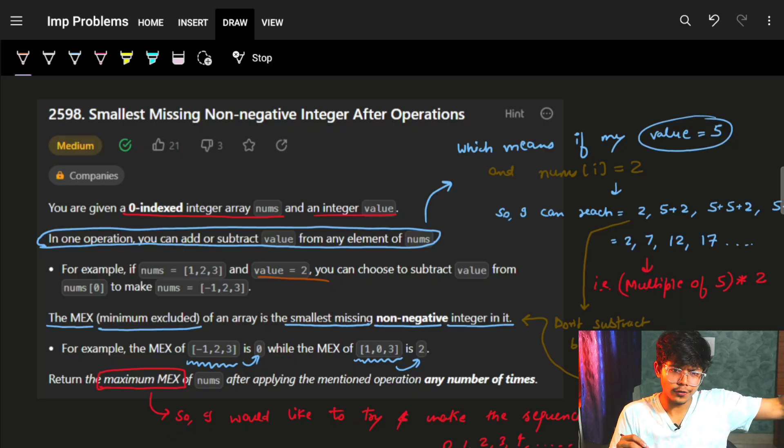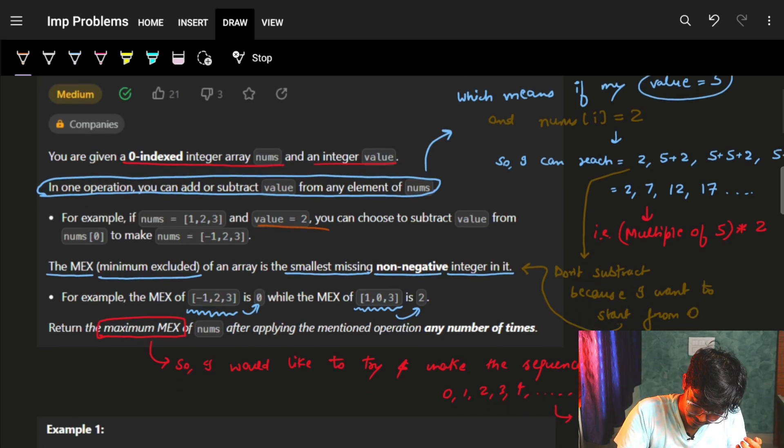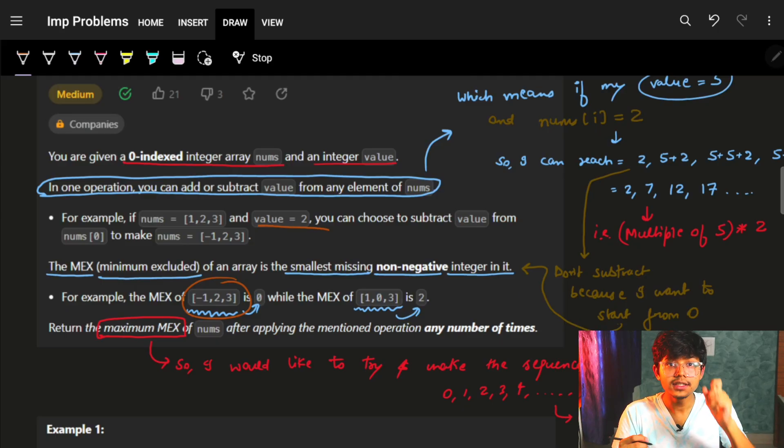So in MEX, I just go on from 0 and see what is the first element which is not present. If 0 itself is not present, for example, in this case, when the MEX of minus 1, 2, 3 is nothing but 0.